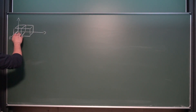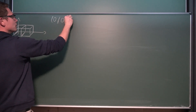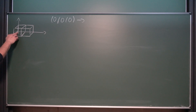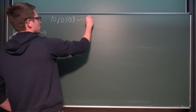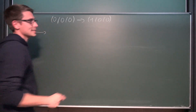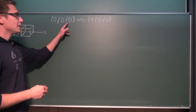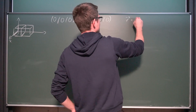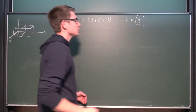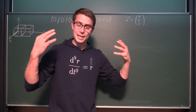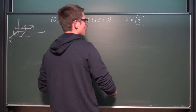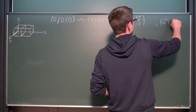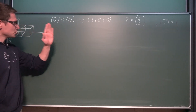From the origin, zero zero zero, to the point one zero zero — this vector is represented by (1, 0, 0). Obviously this is not a very hard problem at all. If we find the norm of this vector it's just one unit long. We're going to leave it at that.